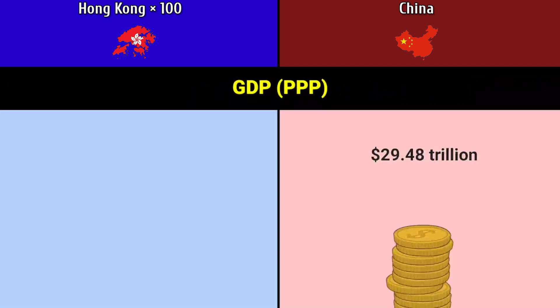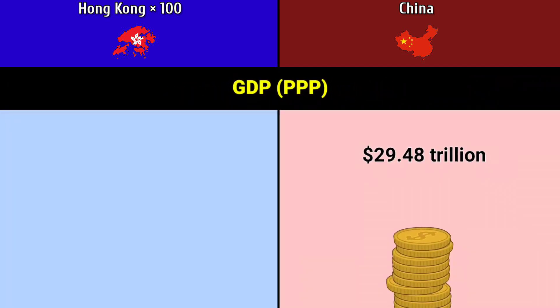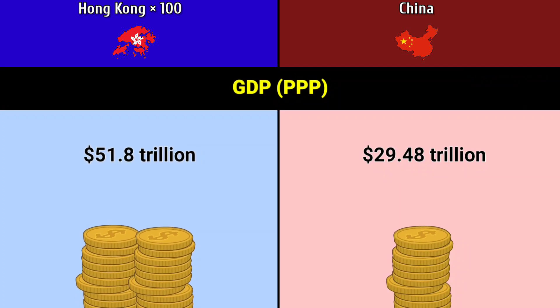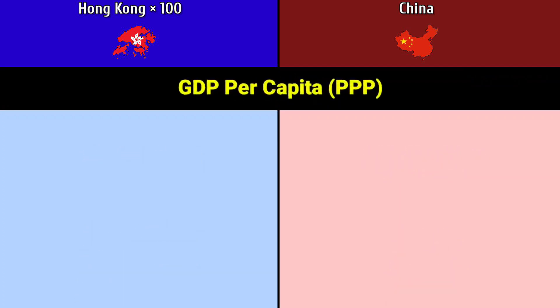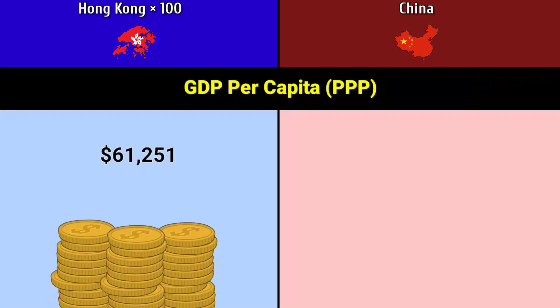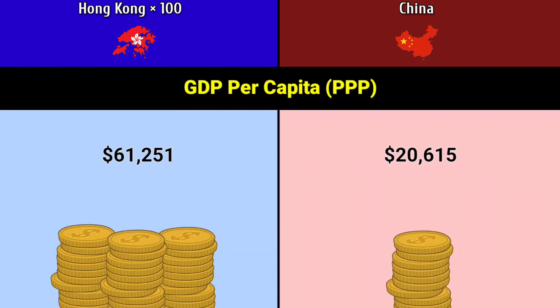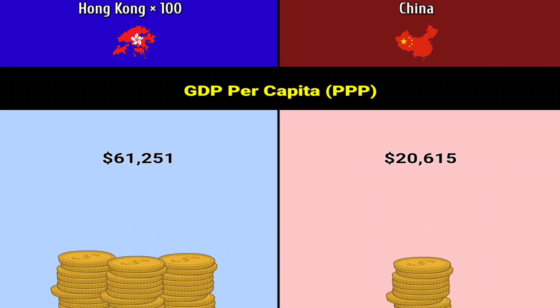GDP PPP: Hong Kong 29.48 trillion dollars, China 51.8 trillion dollars. GDP per capita PPP: Hong Kong 61,251 dollars, China 20,615 dollars.